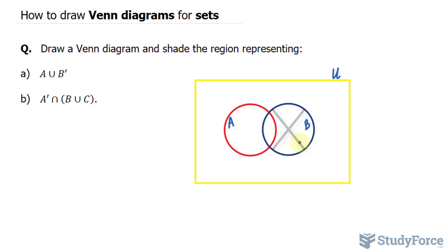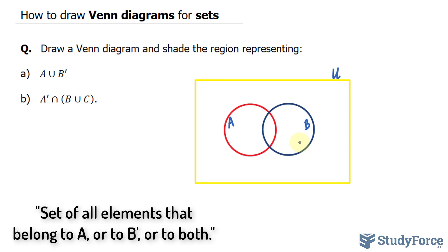Now just recall the union of two sets, in our case A and the complement of B, is the set of all elements that belong to A, or to the complement of B, or to both.